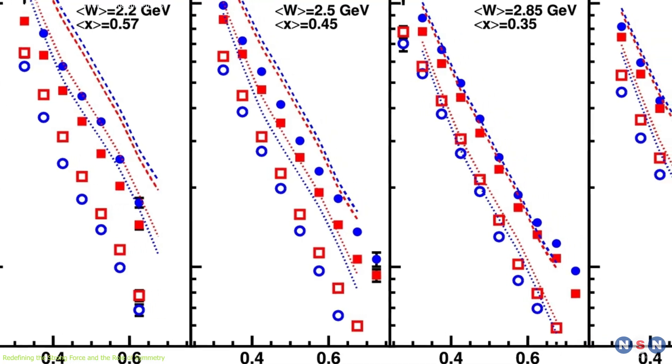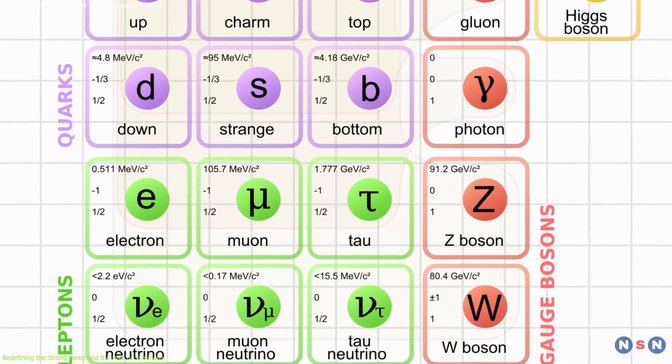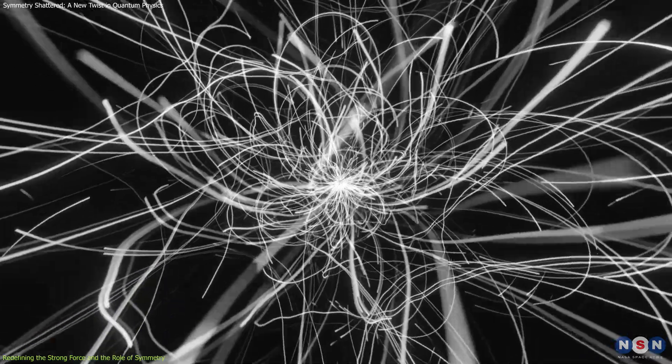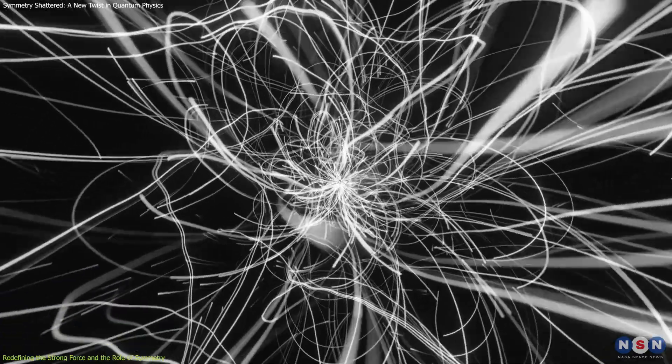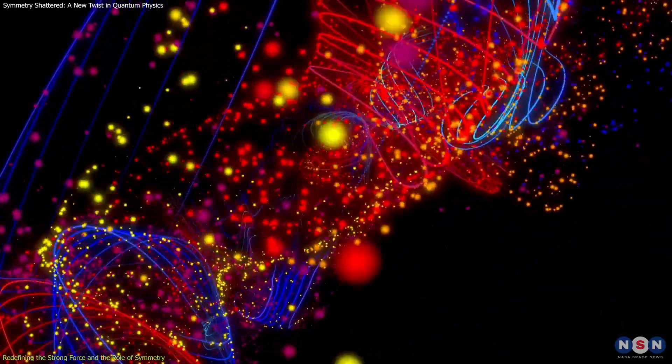Both quark asymmetry and neutrino behavior reinforce that the Standard Model, though powerful, is not the final theory. These challenges motivate exploration into new frameworks, like supersymmetry (SUSY) and string theory.